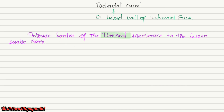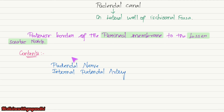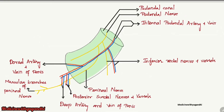The pudendal canal extends from the posterior border of the perineal membrane to the lesser sciatic notch. Now coming to the contents of the pudendal canal: the contents are the pudendal nerve and the internal pudendal artery, accompanied by the vein of the same name.